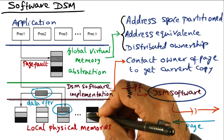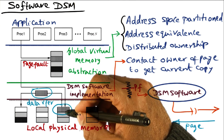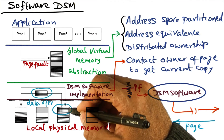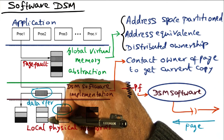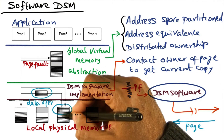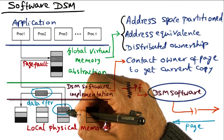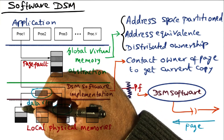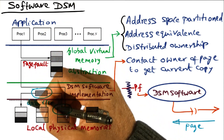Recall what I said about ownership of pages — the residency of a page doesn't necessarily mean that this node is the owner of the page. The owner of this page could have been a different node. So the DSM software would have contacted the owner, and the owner would have said that the current copy is on this other node. So the DSM software would go to that node, fetch this page, and put it into this processor so that this processor is satisfied.